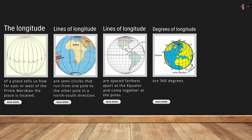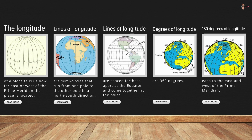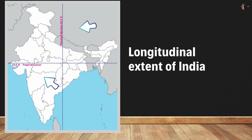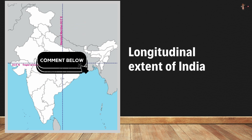There are 360 degrees of longitude — 180 degrees in the east of the prime meridian and 180 degrees west of the prime meridian. This is the longitudinal extent of India. Do you know which states the Tropic of Cancer and the standard meridian pass through? Find out and comment below.